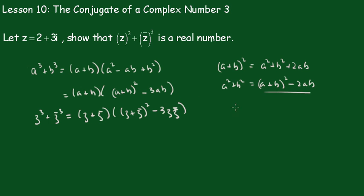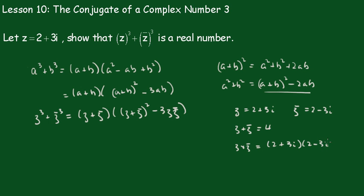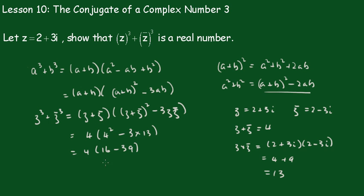Now z equals 2 plus 3i and z-conjugate equals 2 minus 3i, so z plus z-conjugate equals 4. And z times z-conjugate equals 2 plus 3i times 2 minus 3i, which is 4 plus 9, which is 13. So replacing these, we get 4 times 4 squared minus 3 times 13, which gives 4 times 16 minus 39, and that gives the result of negative 92, which is a real number.